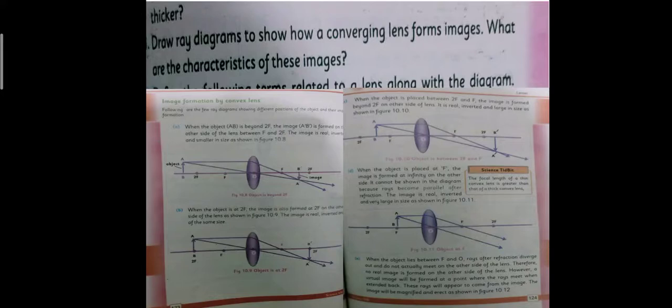The third question is, draw ray diagrams to show how converging lens forms images. Now we are talking about converging lens, and you know that converging lens is convex lens, so that is why you should describe the characteristics of these images. What type of, now we have studied in class, if you remember, that when we use convex lens or converging lens, then what kind of images are we draw?